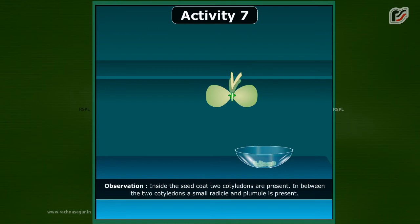Observation: Inside the seed coat, two cotyledons are present. In between the two cotyledons, a small radicle and plumule is present.